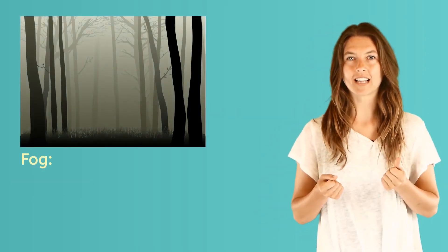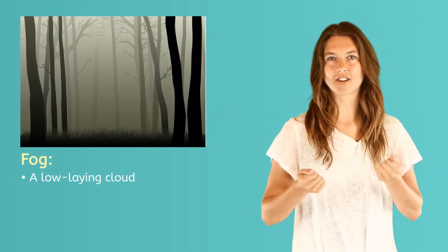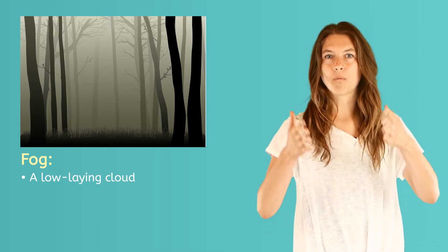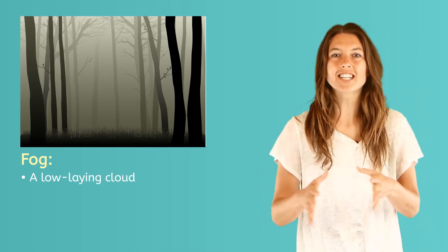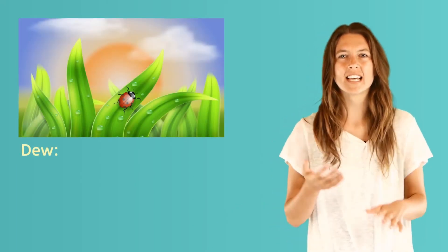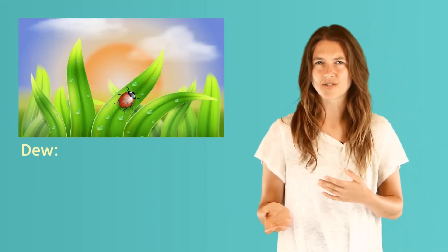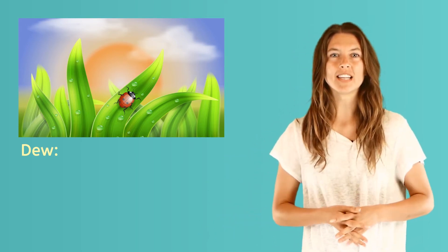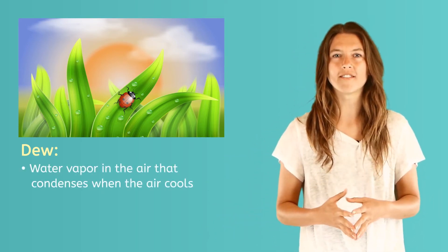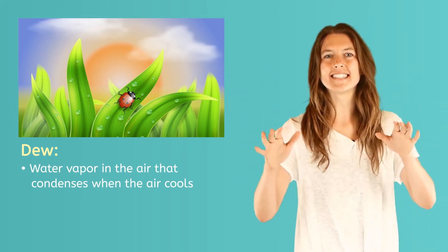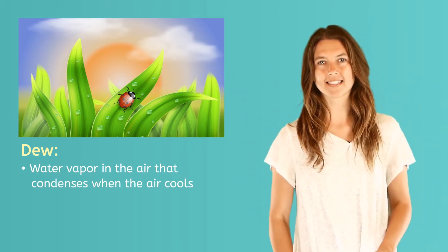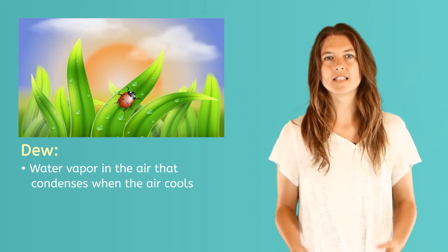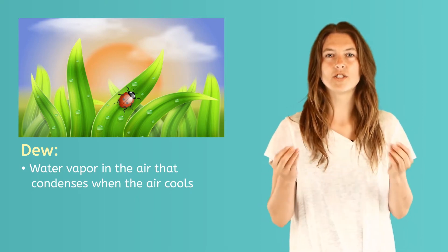Do you know that fog is a cloud in the air near the ground? When you wake up on a foggy day, you're actually in a cloud. On summer mornings, you might wake up and find that the grass is wet without it having rained or the sprinklers being on. That's because during the night, the air is cool and the water vapor in the air condenses onto the ground and the plants. This moist surface it creates is called dew.